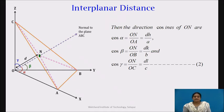Now if we consider the triangle ONA and determine the value of cos alpha, it will be equal to ON upon OA.